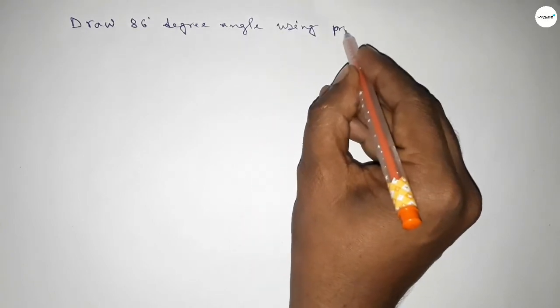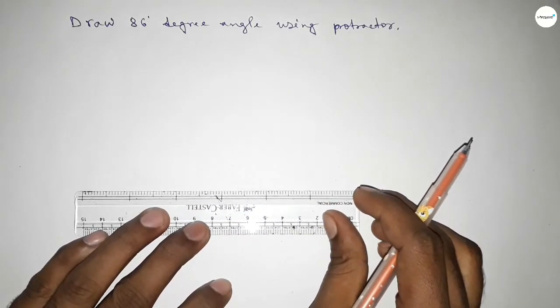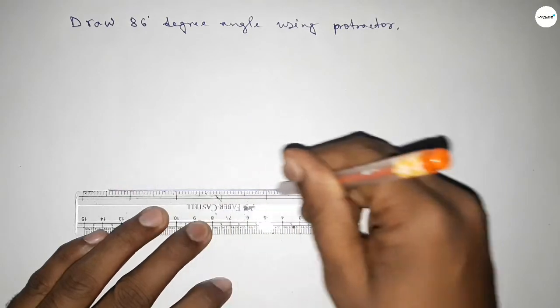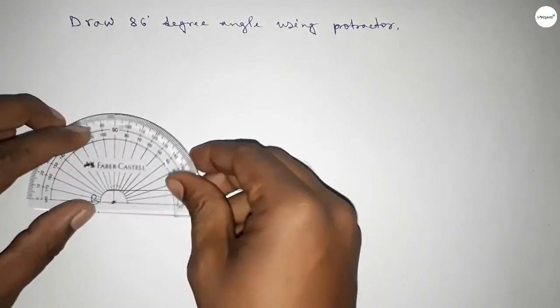So, constructing an 86-degree angle. Let's start the video. First of all, we have to draw here a straight line of any length. Next, taking here point B and here point C. Now, putting the protractor on point B.